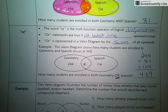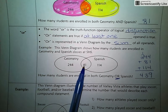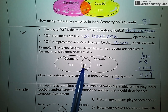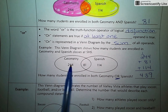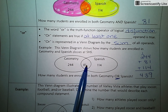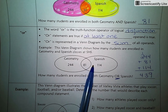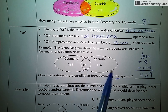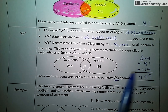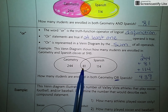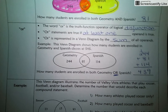Now be really careful here. A lot of students accidentally end up counting this group of 81 twice. There's a total amount — whatever the sum of 244 and 81 is — of students who take Geometry, then a total amount of whatever the sum of 81 and 114 is who take Spanish. But we can't add those two totals together because these 81 students are not twice as many students.